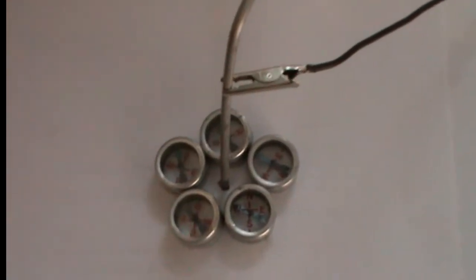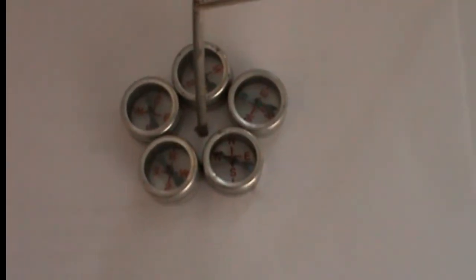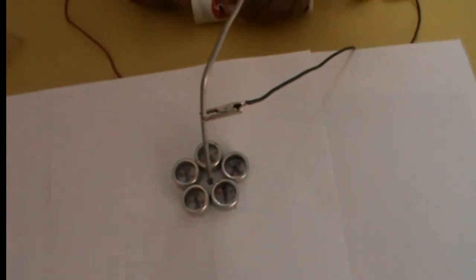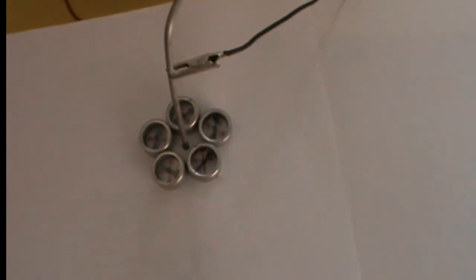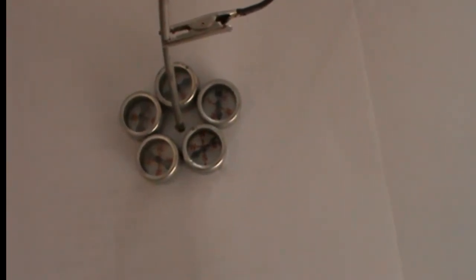Right now the compass needles are showing north and south. You can observe clearly that all the compass needles are in the same direction. Once the circuit is completed, you will see a nice pattern of field lines.